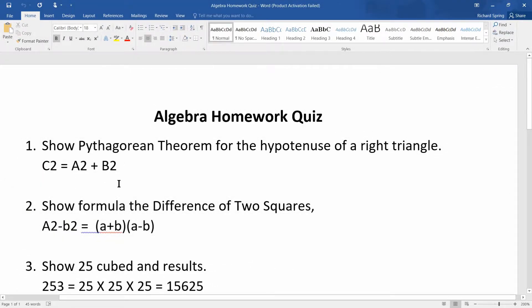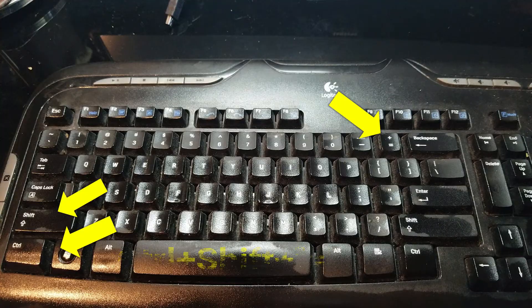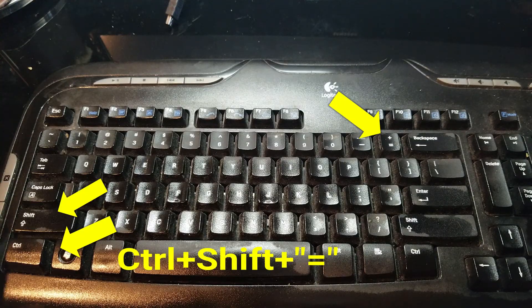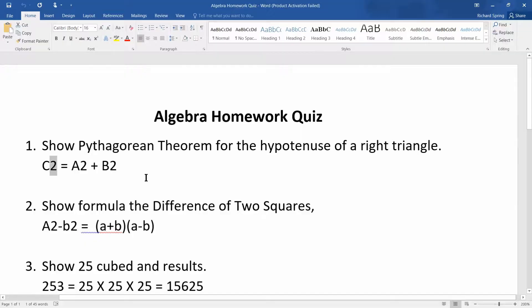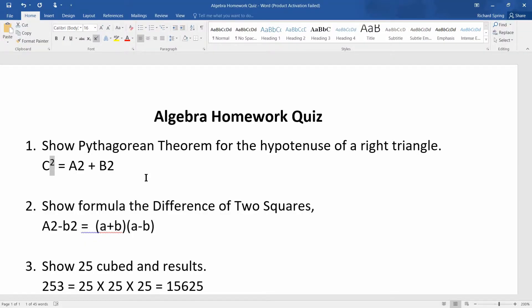The results were correct, except C2 should be C squared, A2 should be A squared, and so on. We need superscripts. So select the first two, and then on your keyboard find Control, Shift, and the equal sign. Press all three. The result is a superscript. Now select the two on the A, Control Shift equals.